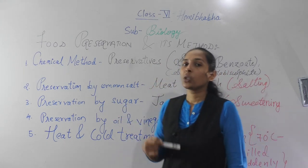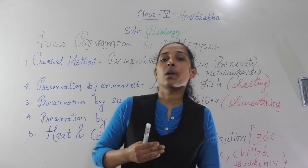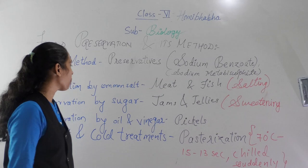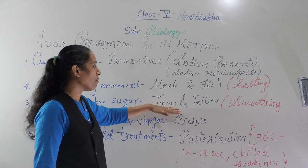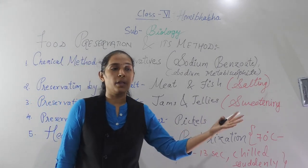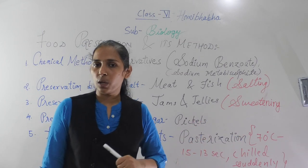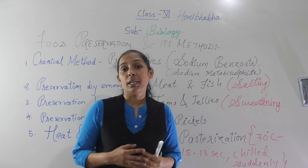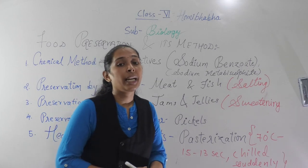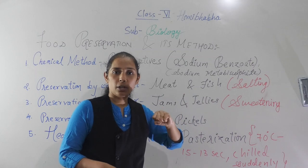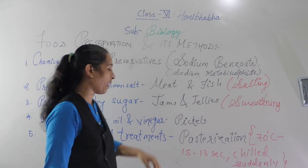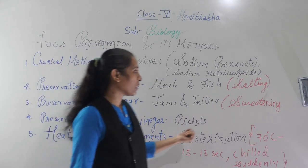The next preservative is preservation by sugar. Sometimes sugar also acts as a preservative and helps to keep certain substances for a long period of time. Substances like jams and jellies can be preserved by adding more amount of sugar. Just like in summer season, our mothers and grandmothers prepare many things from mango — like murabba — by adding more sugar to keep them for a long period of time. Adding sugar in excess is also called the sweetening method.